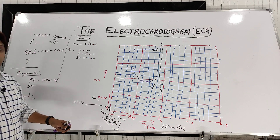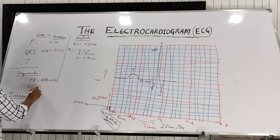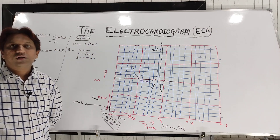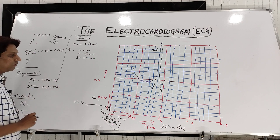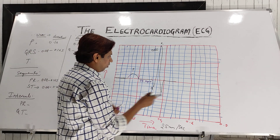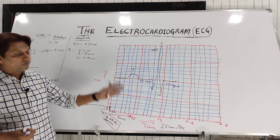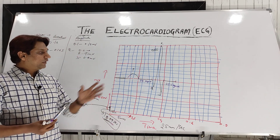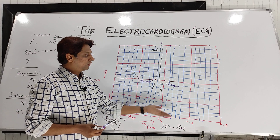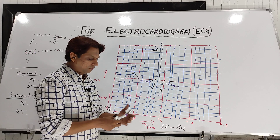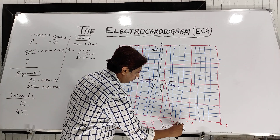Followed by the QRS complex, there is one more isoelectric line known as the ST segment. Its duration is around 0.08 to 0.1 seconds. The ST segment is very important clinically to diagnose many things — ST segment elevation occurs in myocardial infarction, and ST segment depression occurs in ischemia. We will discuss the clinical aspects later. One important point: the junction at the end of the QRS complex and the start of the ST segment is known as the J point.